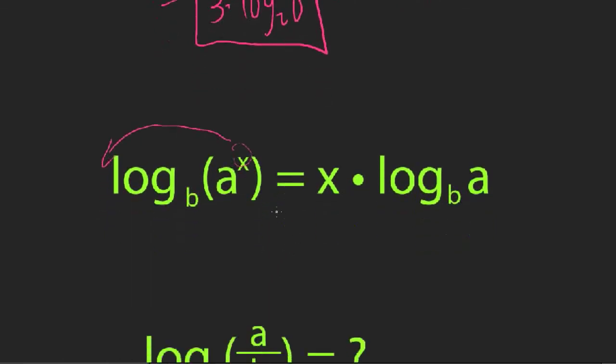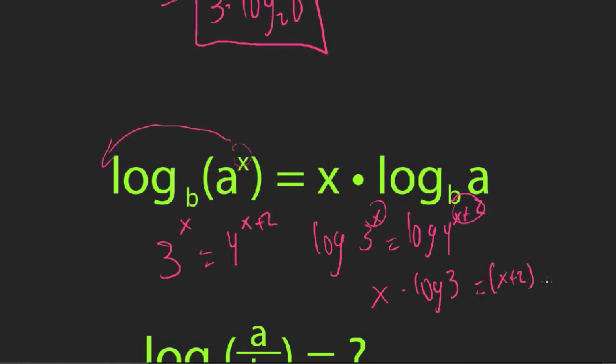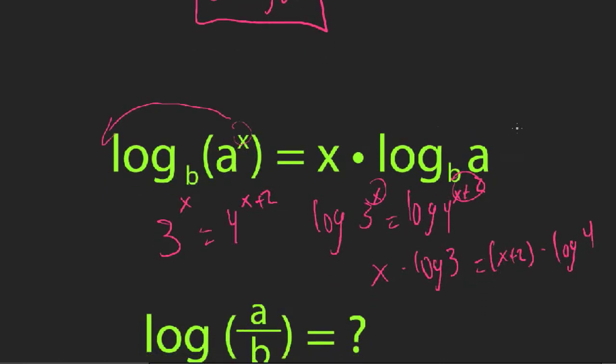And this is super useful because if you're given something like 3 to the x equals 4 to the x plus 2 or something, how would you solve that? Well, you can take a log of both sides. Log of 3 to the x equals log of 4 to the x plus 2. That's the basic rule of algebra. Now you can move these unknowns down out of their exponent spot. So x times log of 3 is just a number. Whatever base you're using, it's just a number. x plus 2 times log of 4. So now this is just a linear equation and you can solve that with basic algebra.